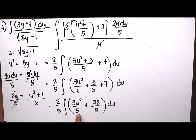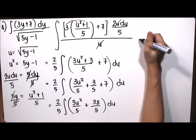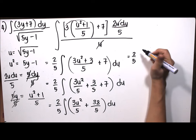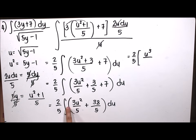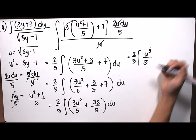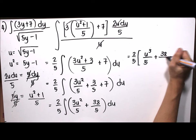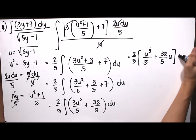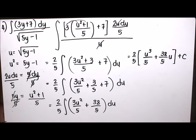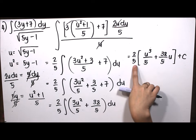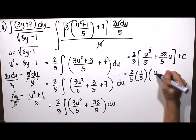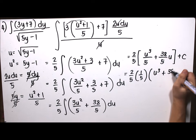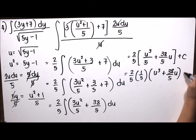Integrating each term using the power formula: the first term 3u squared over 5 integrates to u cubed over 5, since the 3 in the numerator and the 3 from the power formula cancel. The second term 38 over 5 integrates to 38u over 5. So we have 2/5 times u cubed over 5 plus 38u over 5, plus C.